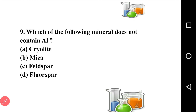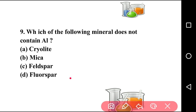Going to next question, that is question number nine: which of the following minerals does not contain aluminium? There are four options: cryolite, mica, feldspar, and fluorspar. The correct answer is option D, that is fluorspar. Fluorspar does not contain aluminium, while the other three all contain aluminium.